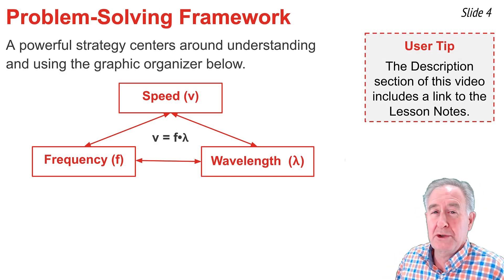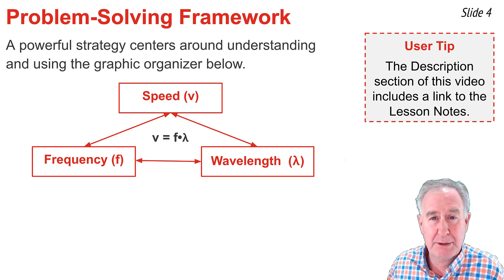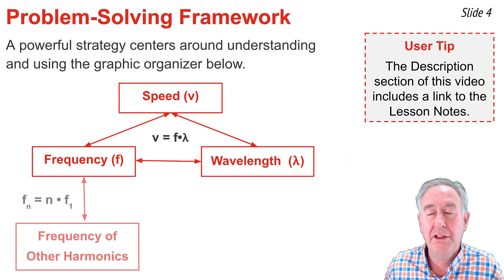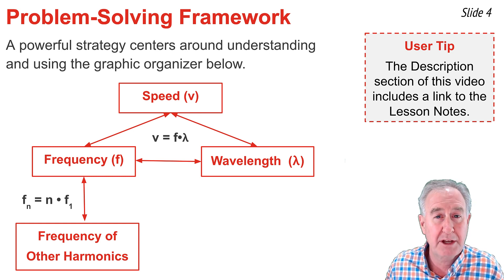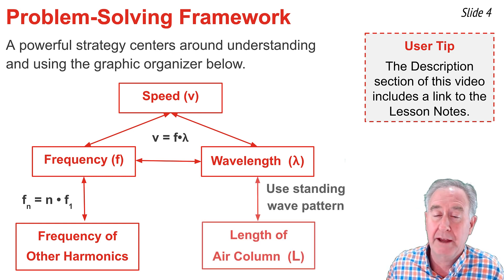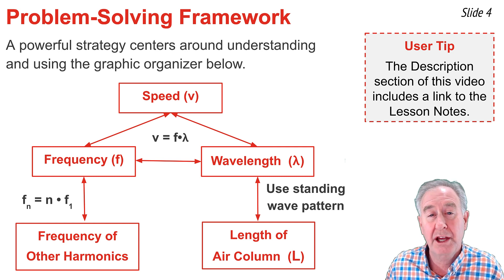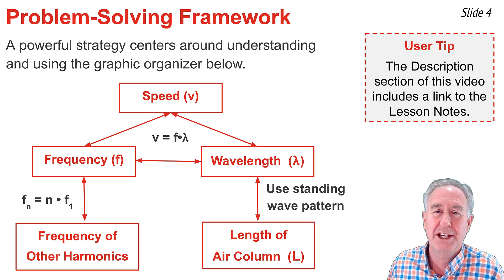In this video, I'll be demonstrating the use of a graphic organizer for approaching open-end air column problems. v, f, and lambda are related by the equation v = f × lambda. If you know any two of these variables, you can calculate the third. The frequency of all harmonics is related to the frequency of the first harmonic by fn = n × f1. The wavelength is also related to the length of the air column — using the standing wave pattern, you can calculate length from wavelength or wavelength from length. I'll demonstrate this using five examples.